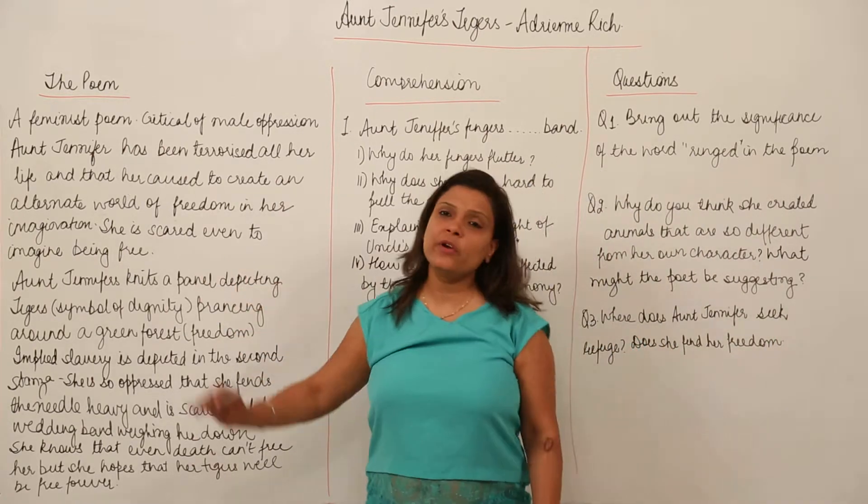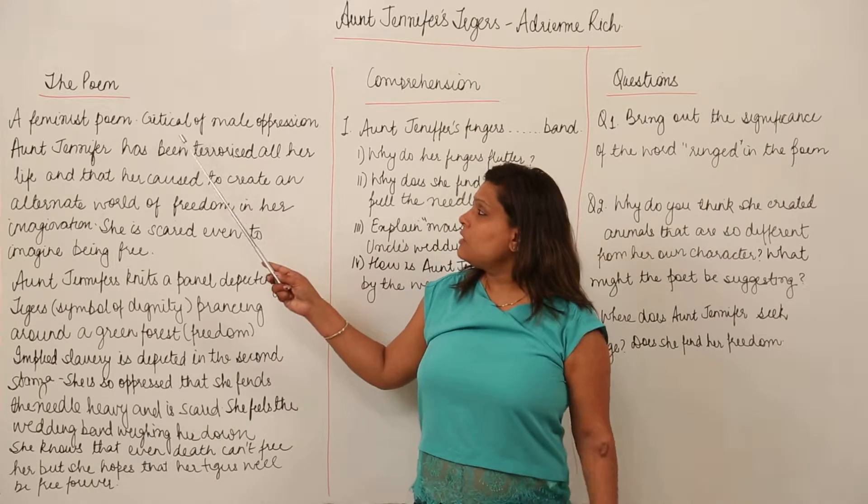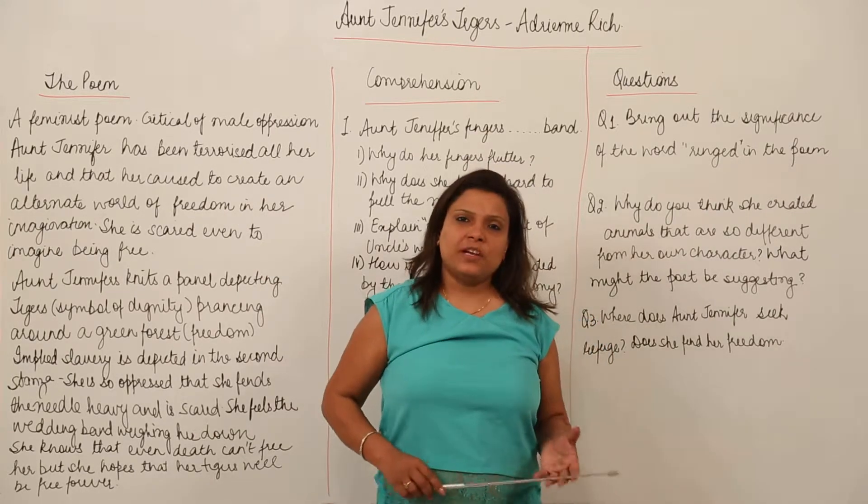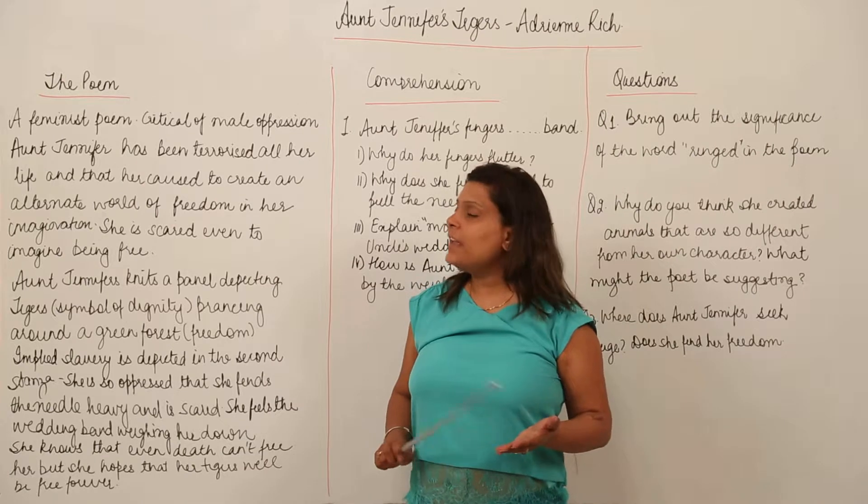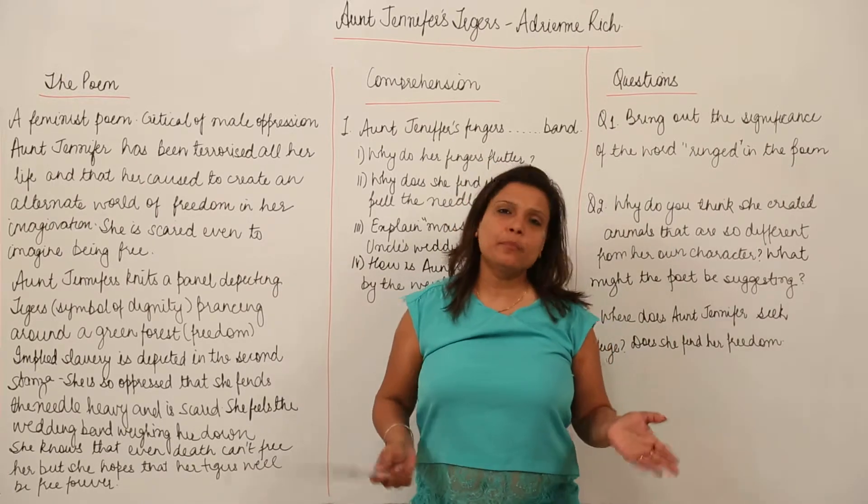As you must remember, the poem is a feminist poem. It was critical of male oppression and we see that a lady, Aunt Jennifer, probably the poet's aunt,